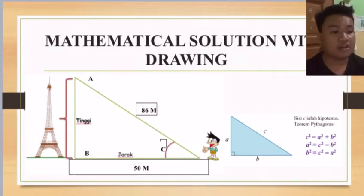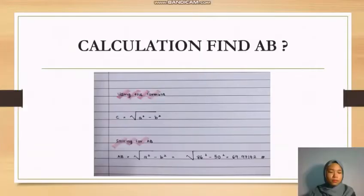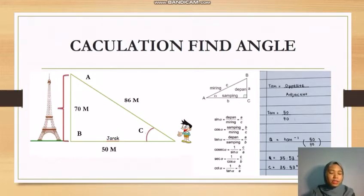Using the trigonometry formula, I was able to find the height of the Eiffel Tower with a distance of 50 meters and 86 meters. Thank you Hafiz for the introduction. Next, we will find the delta angle based on the trigonometry of the building using the trigonometry formula.